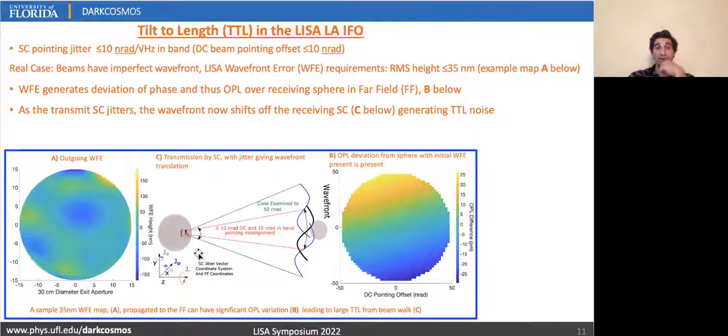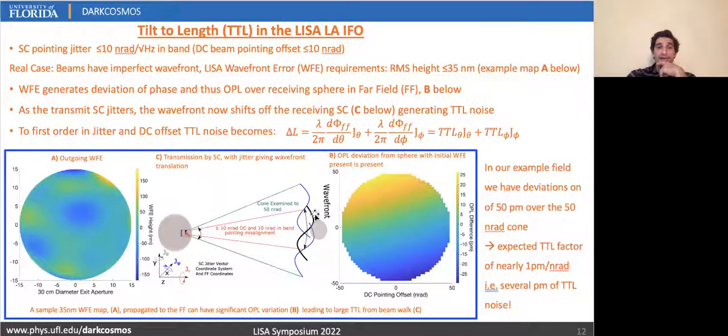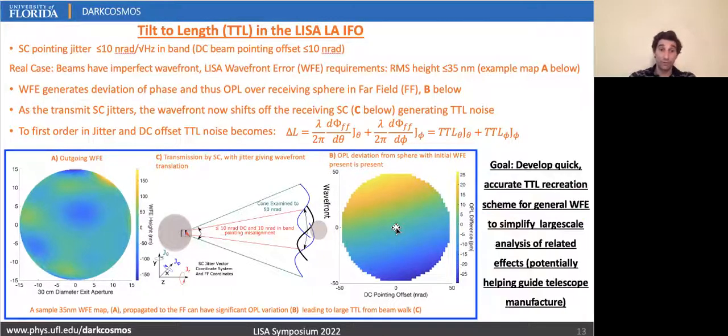Now, as the transmitting spacecraft jitters, different wavefronts sweep across the receiving spacecraft location, moving this up and down. The change in length can be written to first order in jitter and DC offsets as the spacecraft jitter components times the angular derivative divided by the wave number of the light, which we rewrite in terms of the tilt length coupling components, or TTL components. In our example, 50 picometers of phase deviation occurs over a 50 nanoradian far field cone, and so we expect these components to be on the order of half a picometer of noise per nanoradian jitter, and so for LISA, we'd expect about 5 picometers of noise.